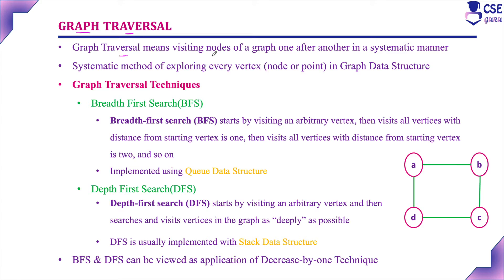Graph traversal means visiting nodes of a graph one after another in a systematic manner. We start from one arbitrary vertex, consider that as a starting vertex, visit that vertex, and then visit all other vertices in the given graph one by one. So graph traversal is a systematic method of exploring every vertex, node, or point in a graph data structure.